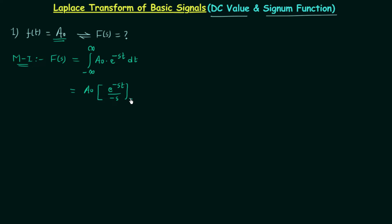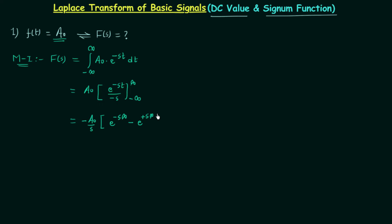The lower limit of integration is minus infinity and the upper limit is infinity. Minus s has no term of time t, so we take it out and we have minus A₀ over s, multiplied by e^(−s·∞) minus e^(−s·(−∞)), which we can write as e^(+s·∞). We know s is equal to σ + jω — it is a complex variable.